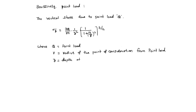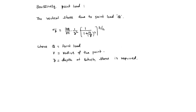Z is the depth at which stress is required. R is the radius of the point at which stress is required. These R and Z are parameters and Q is the Point Load, so based on that we can find the vertical stress due to Point Load.